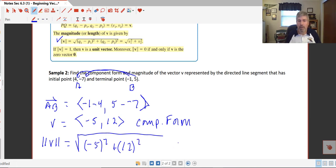And we get the square root of 169, which is 13. And if you see a 5, 12, 13 right triangle there, that's excellent. You are in good shape. And we'll get some more practice with vectors, and I'll see you in class.